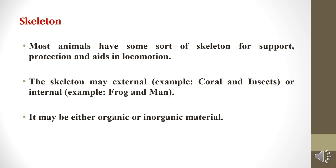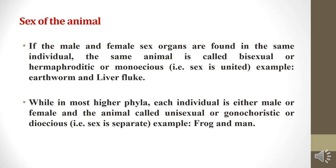Most animals have some sort of skeleton for support, protection, and aid in locomotion. The skeleton may be external — for example, coral and insects — or internal — for example, frogs and humans. It may be made of either organic or inorganic material.